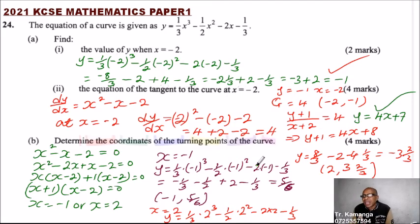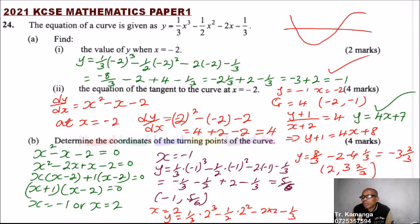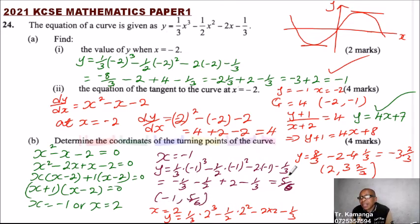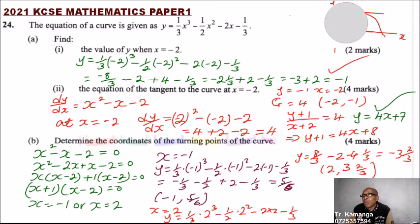So that is the turning point. Since this is a cubic graph, it is a graph that has two turning points — that's why we are getting two values. One turning point is (minus 1, 5/6), and the other turning point is x equals 2, y equals minus 3 and 2 thirds. So that's how you work out that question, and you should be able to get 10 marks.